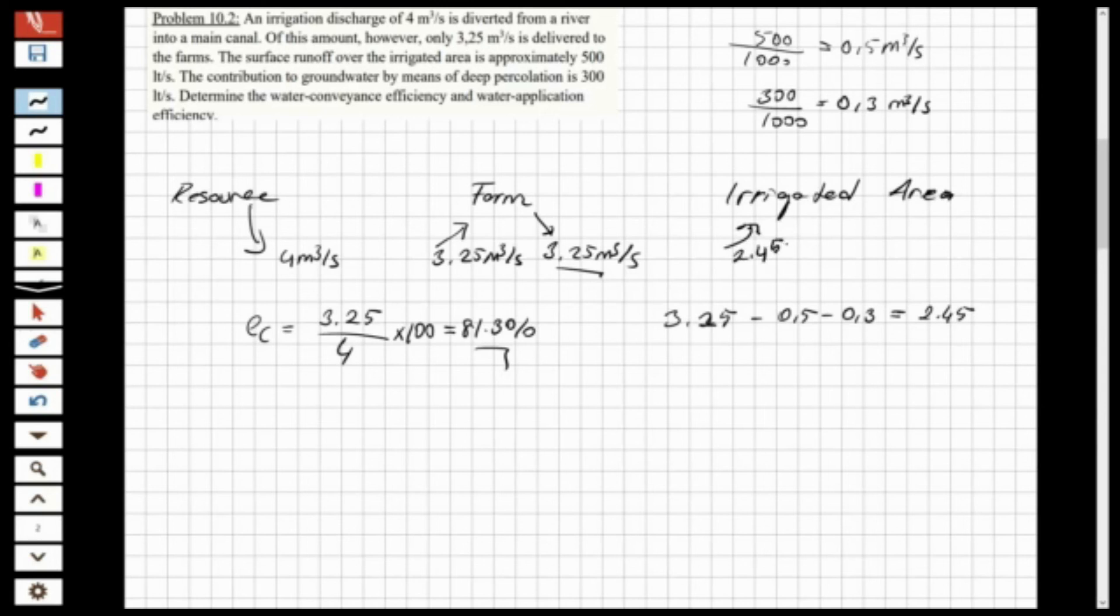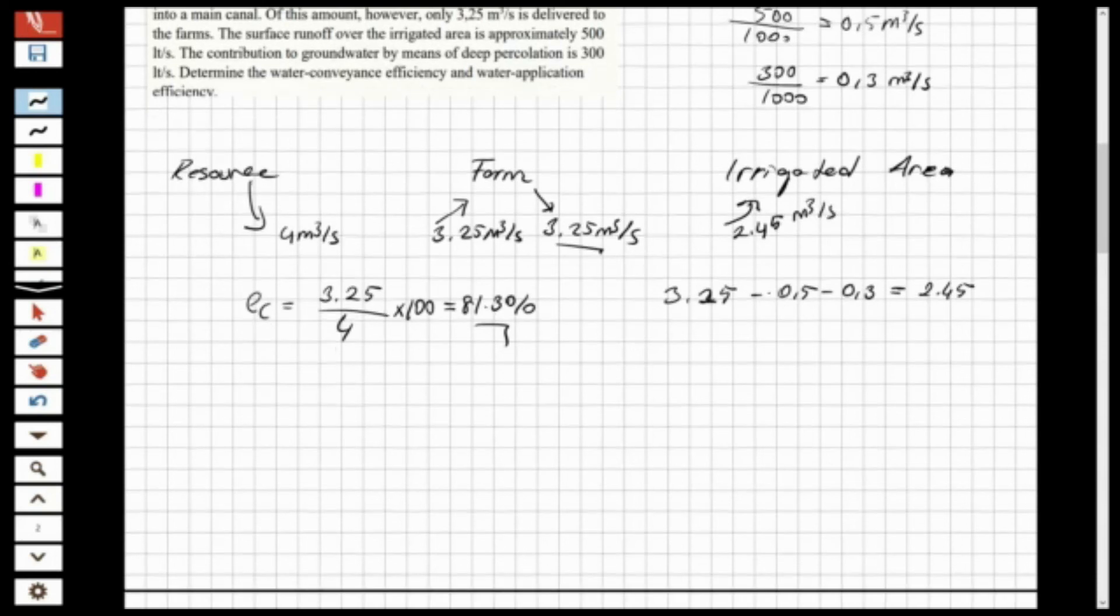Now I have the water also here, so let's find the water application efficiency. It's going to be 2.45 over 3.25, and when I multiply with 100, I'm going to obtain 75.38% as the water application efficiency. And this is water conveyance and this is water application efficiency.